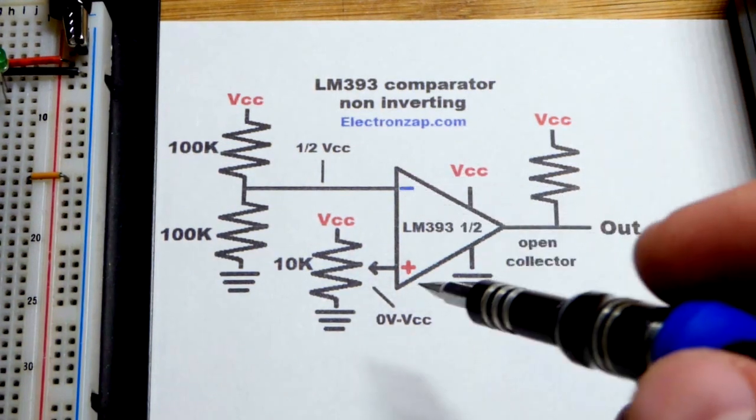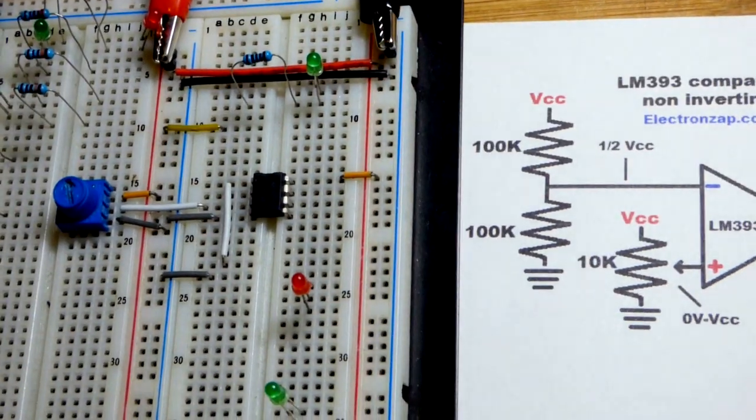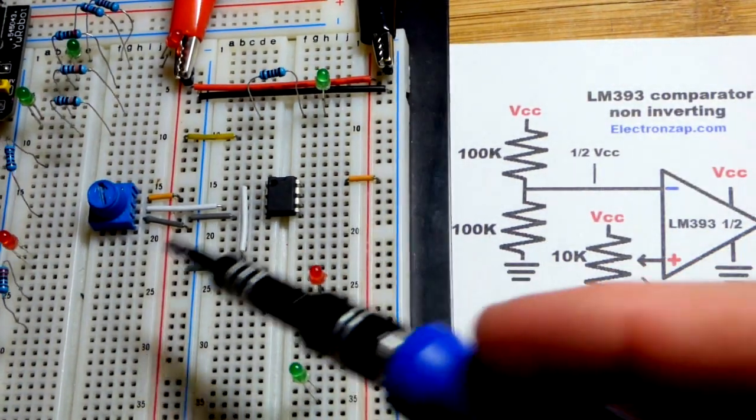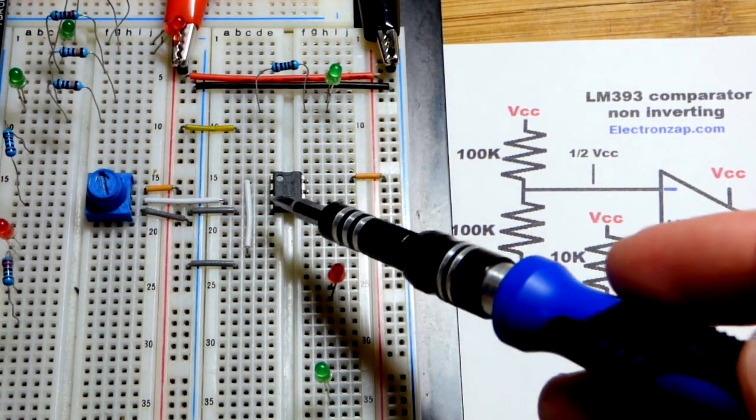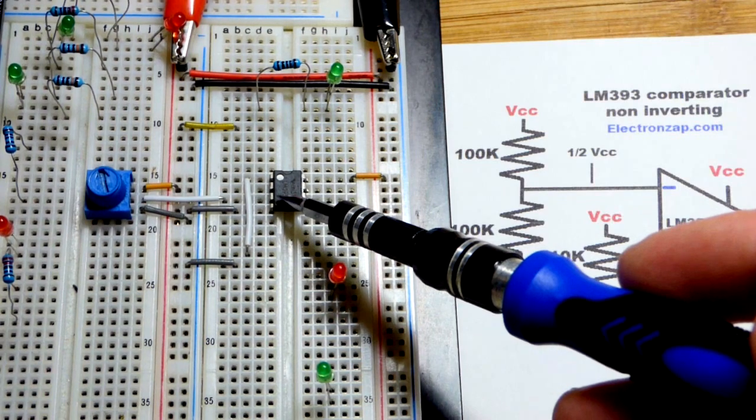I have the inverting above the non-inverting there so it lines up pretty well. Now I already have our trim pot here to set a variable resistance, it goes to that white jumper there, the non-inverting input.